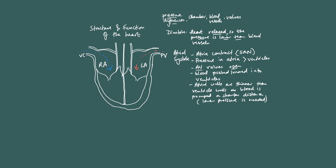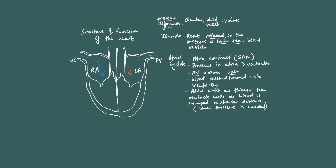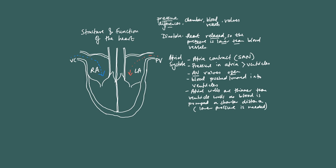So because of atrial systole, the AV valves open, and because they opened, deoxygenated blood moves into the right ventricle and oxygenated blood moves into the left ventricle. That's atrial systole.